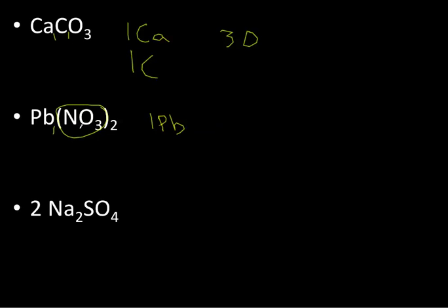So in every NO3, we have one nitrogen. One times two tells me I have two nitrogen, and I have three oxygen in every one molecule. So if I have two, it's two times three tells me six oxygen atoms.